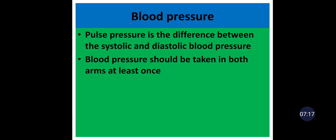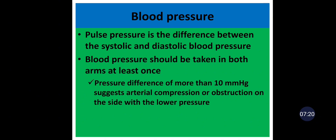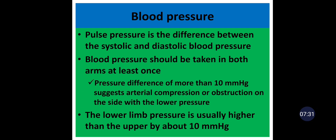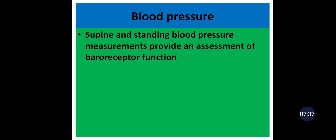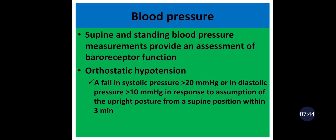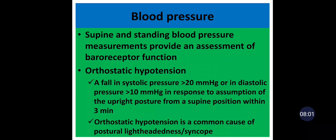Blood pressure should be taken in both arms at least once, because a pressure difference of more than 10 mmHg suggests arterial compression or obstruction on the side with the lower pressure. The lower limb pressure is usually higher than the upper by about 10 mmHg. Supine and standing blood pressure measurements assess baroreceptor function and help diagnose orthostatic hypotension — defined as a fall in systolic pressure greater than 20 mmHg or diastolic greater than 10 mmHg upon assuming the upright posture. Orthostatic hypotension is a common cause of postural lightheadedness and syncope.